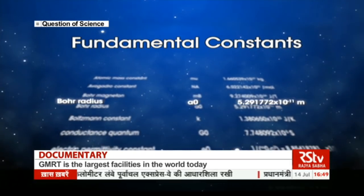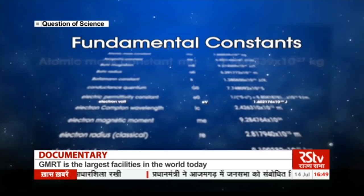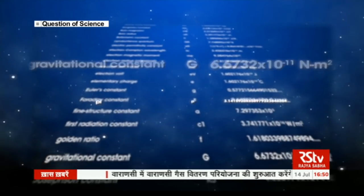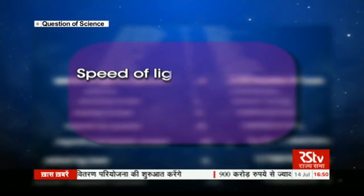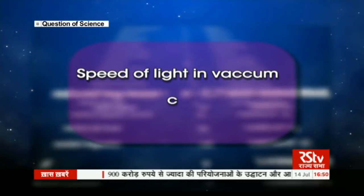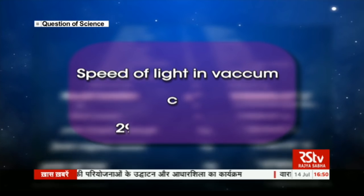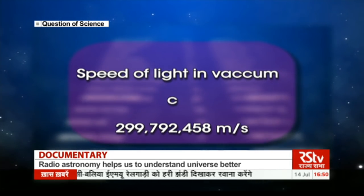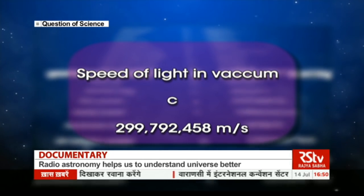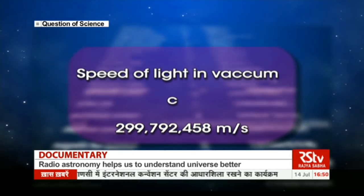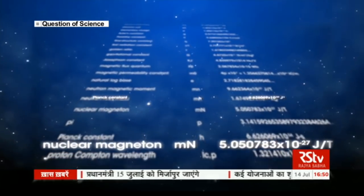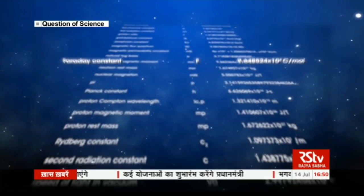But what are fundamental constants? They are physical quantities whose value remains unchanged throughout nature and time. One of the most familiar fundamental constants is the speed of light, denoted by the small letter c, with a value of 299,792,458 meters per second in vacuum — a value that remains constant throughout space and time. They are the glue that holds together our theories of the universe and explain the precise way our universe behaves.